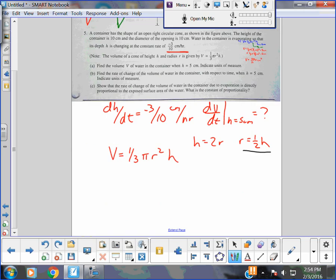I can go volume equals 1 third pi, 1 half H quantity squared H. And I get volume equals, 1 half H quantity squared is 1 fourth H squared, 1 fourth times 1 third, 1 twelfth pi H cubed. And I am loving life at this point. I am loving life.